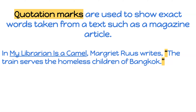Let's take a look at this example. In My Librarian is a Camel, Margaret Roos writes, 'The train serves the homeless children of Bangkok.' Now we see here the title of the book is underlined. The author Margaret Roos is identified, so there's the source. And we see quotes around the exact words that she wrote. The reason why we want to quote her words is so that we don't plagiarize. We want to give her credit for writing this amazing sentence.